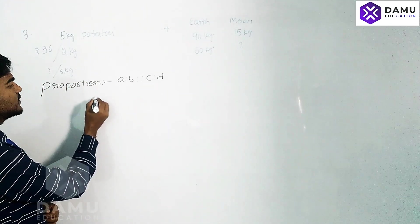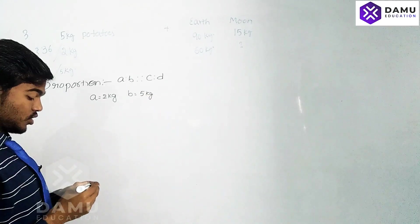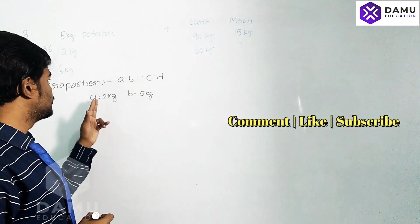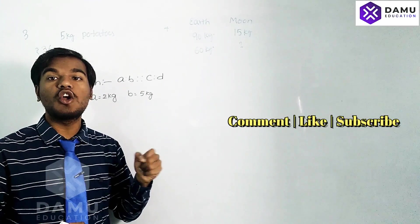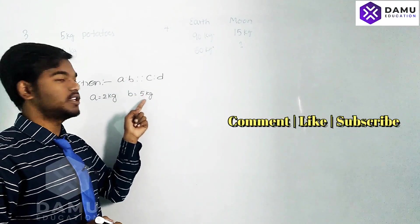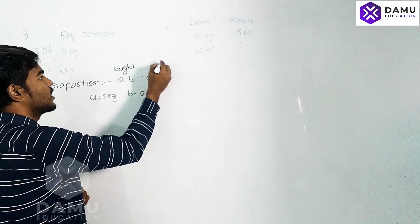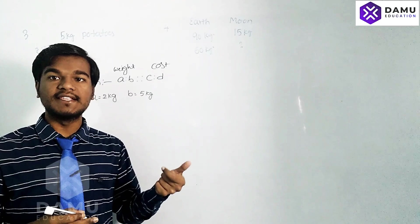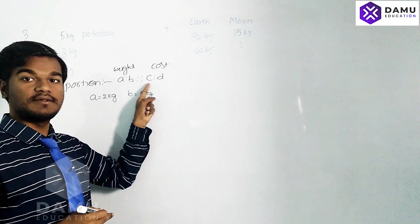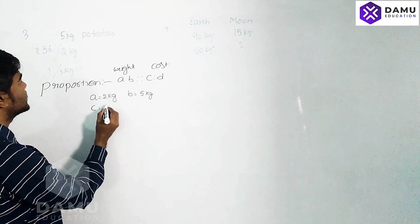What is the known quantity? 2 kg. Let a equals 2 kg and b equals 5 kg. So whatever ratio you take for a and b, that should be related to the same concept. Here a is 2 kg and b is 5 kg — we should not mix rupees in the place of a and b, because a and b are related to weight. Related to cost is c is to d. So c, the cost of 2 kg, is 36 rupees.